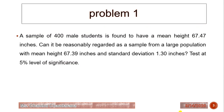Problem 1: A sample of 400 male students is found to have a mean height of 67.47 inches. Can it be reasonably regarded as a sample from a large population with a mean height of 67.39 inches and a standard deviation of 1.30 inches? We have to test at a 5% level of significance. So the sample size n is 400, the sample mean is 67.47, the null hypothesis mean is 67.39, and the standard deviation is 1.30.